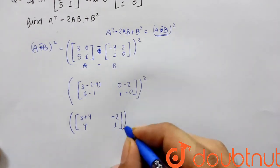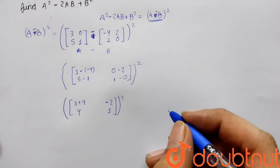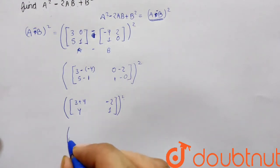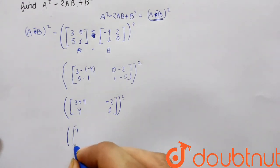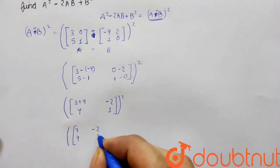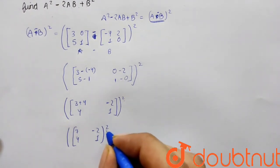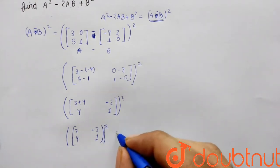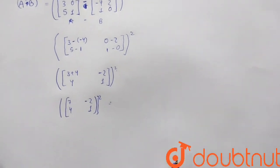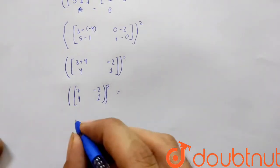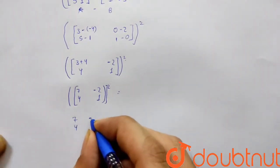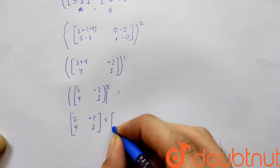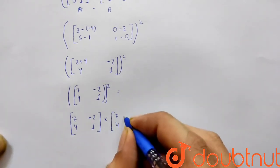So the result of A - B is the matrix [7, 4; -2, 1]. Now we need to do the square of this matrix, so we compute [7, 4; -2, 1] multiplied by [7, 4; -2, 1].